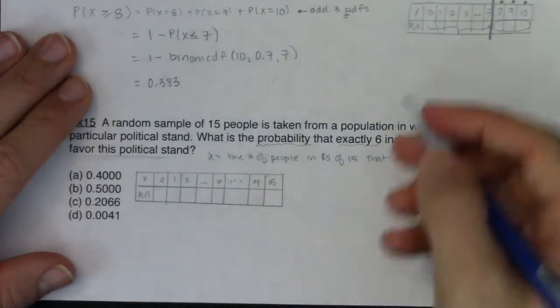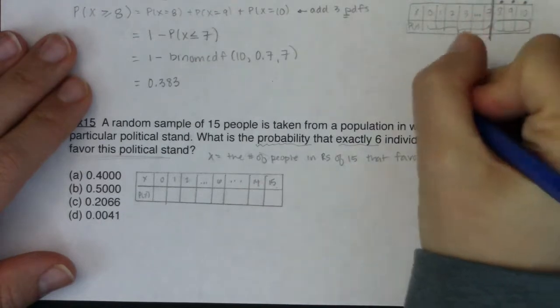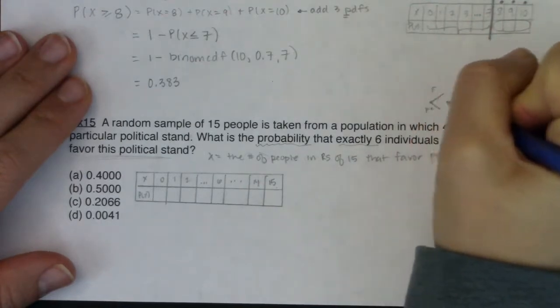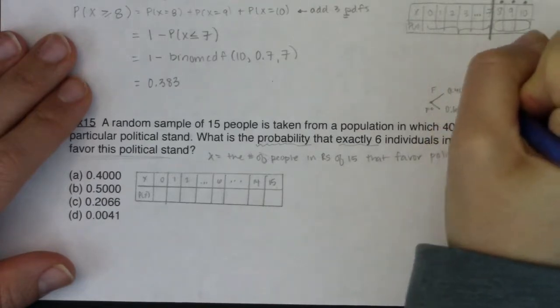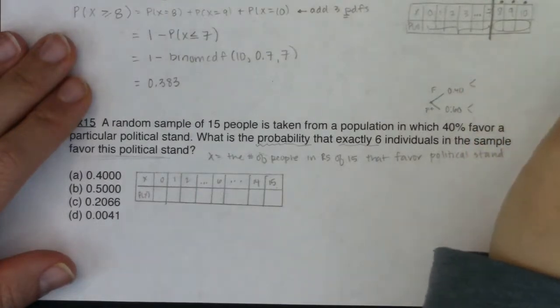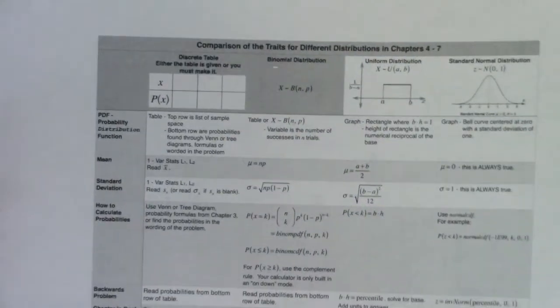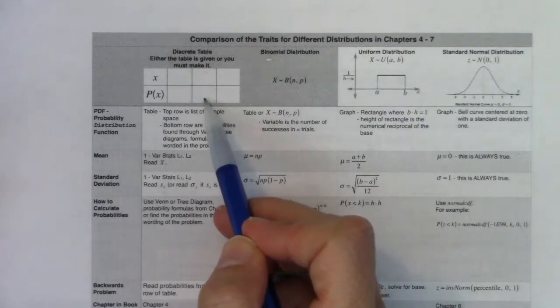That's a lot. And then imagine if you wanted to start doing this, you'd have to start making a tree diagram, like the first person could favor the political stand or not, right? So we'd have 40 against 60. And then you'd have to go out for the second person, and then the third, and then the fourth, and then the fifth. That's a massive tree diagram. And this is a massive table. So when it comes to something like that, you feel like, would she really ask me to make a table that large? Probably not.